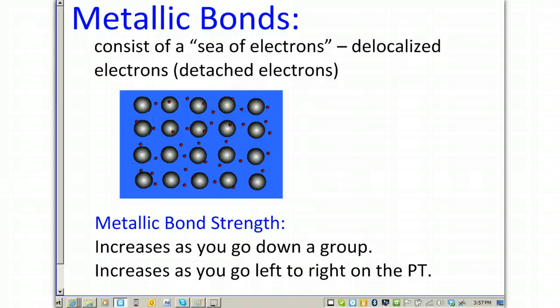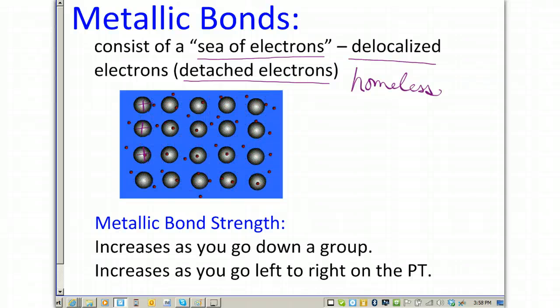What causes the sea of electrons? It's caused by detached electrons. Because metals want to lose their electrons to become stable, metals will go ahead and detach their valence electrons, causing them to be delocalized, also known as homeless. And so, the electrons are just roaming around in the metals, while the metal nuclei are left positive, which is what gives them their stability.